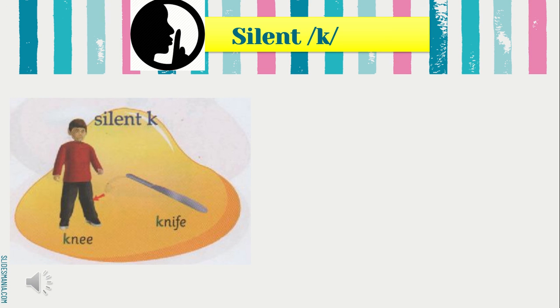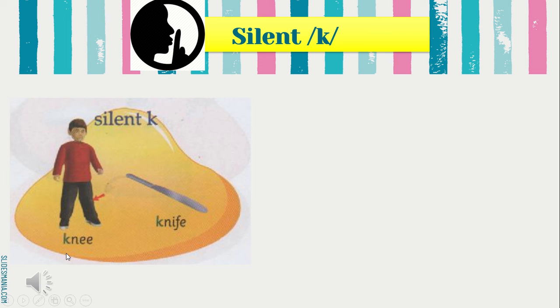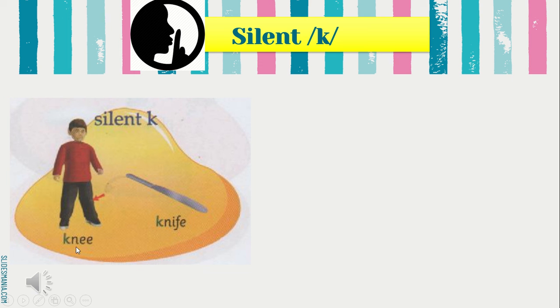Next we move on to the next one, which is silent K. Let us listen to the words given in the textbook first. Silent K — knee, knife. Silent GH di mana dalam perkataan tu terdapat huruf K. However, we don't say the sound.